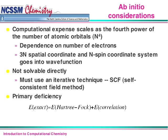Some real quick considerations: the computational expense scales as the fourth power of the number of atomic orbitals — N to the fourth. The more electrons you have, the significantly more computing power and time you need. If you add 10 electrons, the problem is not 10 times bigger — it's 10 to the fourth bigger, so it gets really out of hand very quickly.